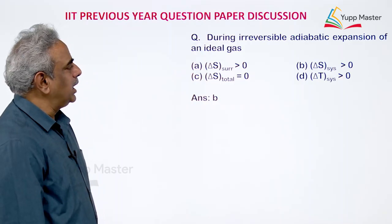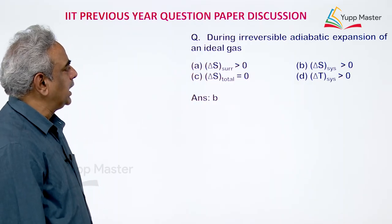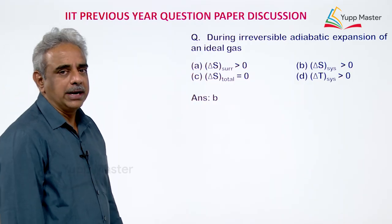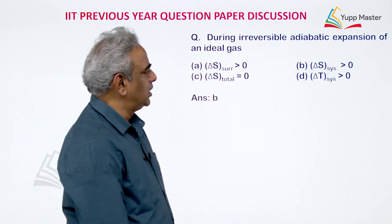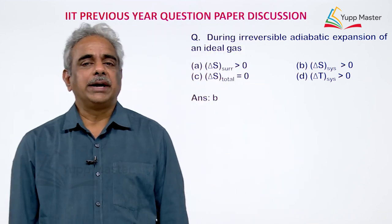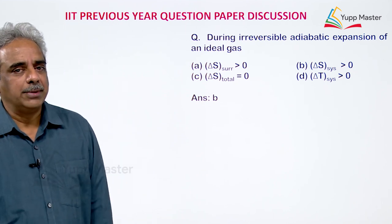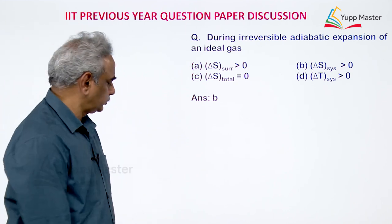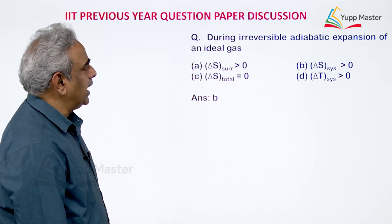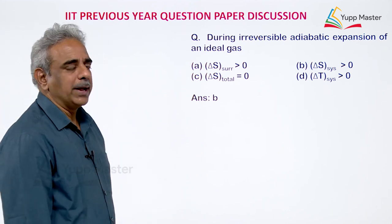During irreversible adiabatic expansion of an ideal gas, what will happen? That is a beautiful question. It is based on the second law of thermodynamics — irreversible adiabatic expansion.